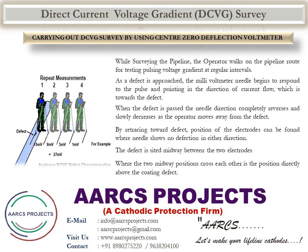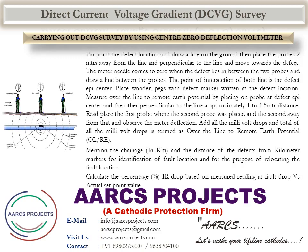By retracing toward the defect, the position of the electrodes can be found where the needle shows no deflection in either direction. The defect is sited midway between the two electrodes. Where the two midway positions cross each other is the position directly above the coating defect. Pinpoint the defect location and draw a line on the ground, then place the probes two meters away from the line and perpendicular to it, and move towards the defect. The meter needle comes to zero when the defect lies between the two probes — draw a line between the probes. The point of intersection of both lines is the defect epicenter.